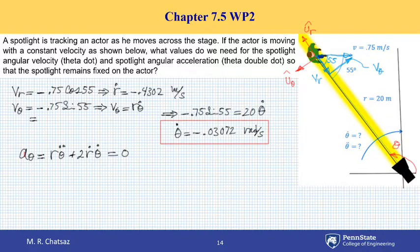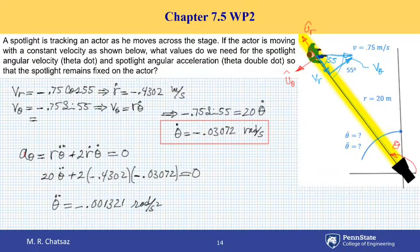So if I plug r equal to 20 meters times theta double dot plus 2 r dot, which is minus 0.4302, times theta dot, which is minus 0.03072, equal to 0. So take a calculator and do the numerical calculations and get theta double dot equal to minus 0.001321 in units of radians per second squared. So this is the second unknown, or angular acceleration of the rotating spotlight.